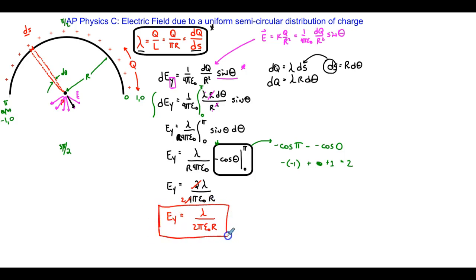Now I could make some substitutions if needed. Back with this guy, if they didn't want my answer in terms of lambda, I can replace lambda with q and l or pi and r. And so that would be pretty easy for me to do. Let's go ahead and do one of those kinds of substitutions where we'd get lambda is equal to q over pi r.